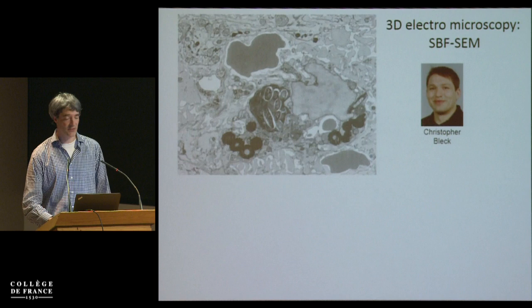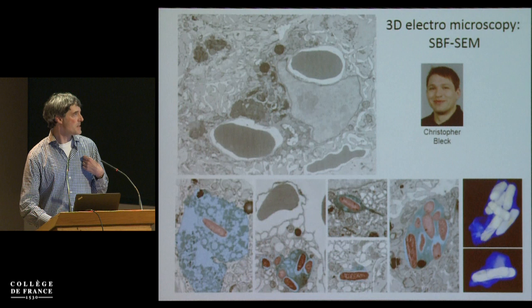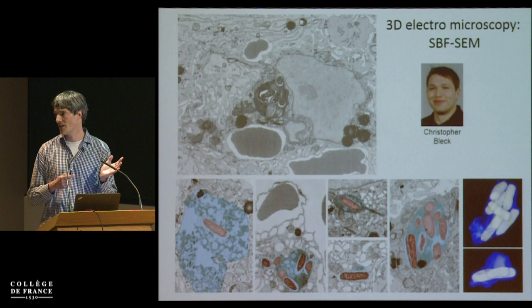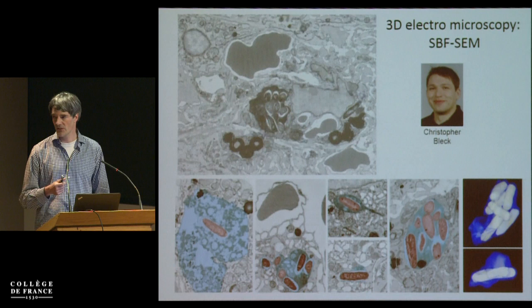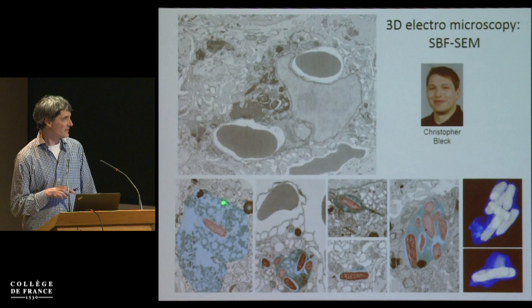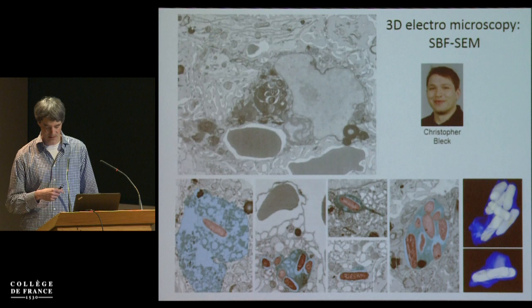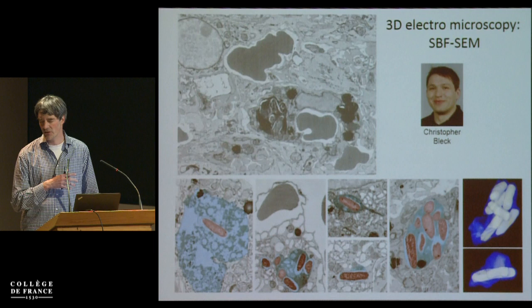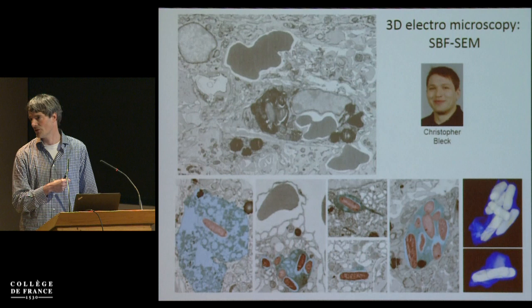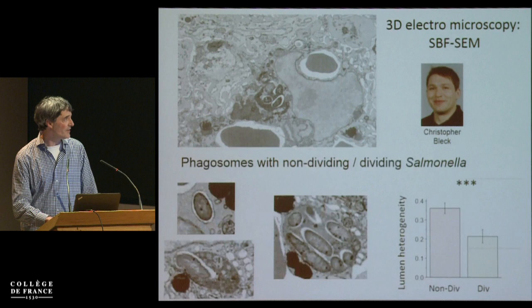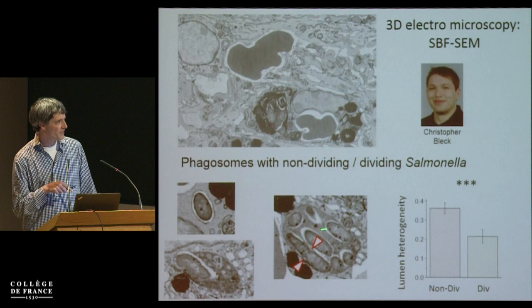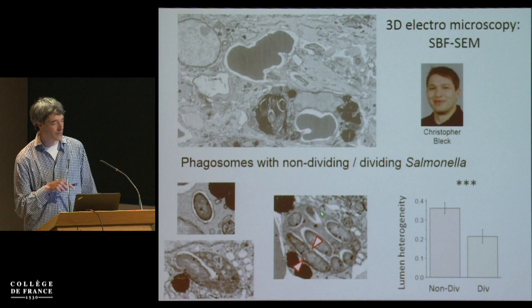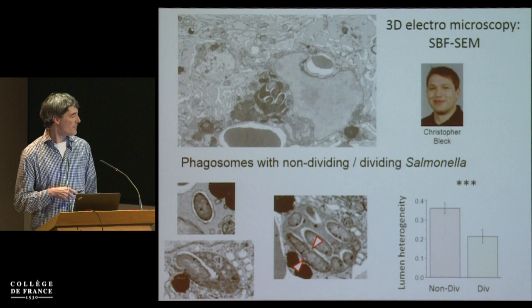Chris did this for two years — a major effort since there is no software to automatically analyze this data. In a small part of the huge dataset, he has found 800 bacteria, and all these bacteria phagosomes show enormous diversity — which we never see in cell culture. The question is whether this impacts nutrient supply rate. We cannot do correlative approaches with this 3D EM approach so far. But we can look at dividing cells as a proxy. We find most dividing cells in phagosomes where the lumen content is pretty homogeneous.